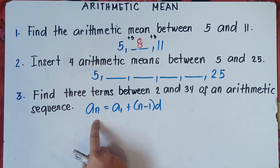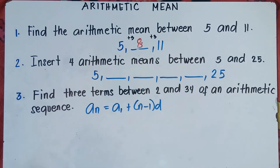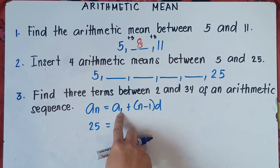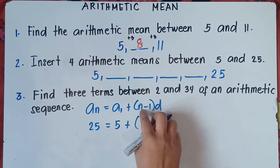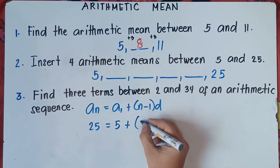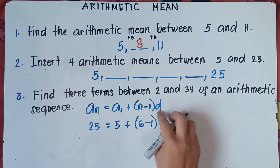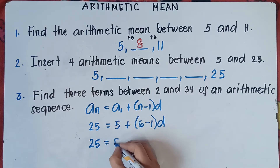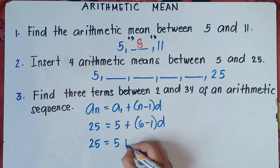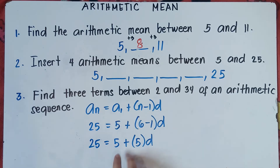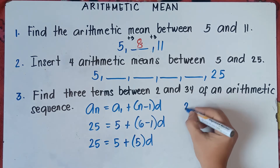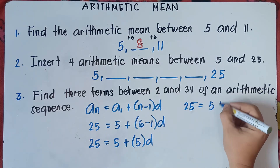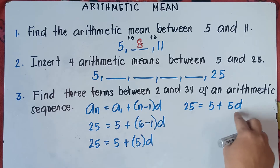So a sub n is the last term, which is 25. So: 25 equals 5 plus (n minus 1) times d. We count the number of terms: 1, 2, 3, 4, 5, 6 — so n equals 6. This gives us 25 equals 5 plus (6 minus 1) times d. Remember PEMDAS — multiplication comes first before addition. So 6 minus 1 is 5, giving us 25 equals 5 plus 5d.